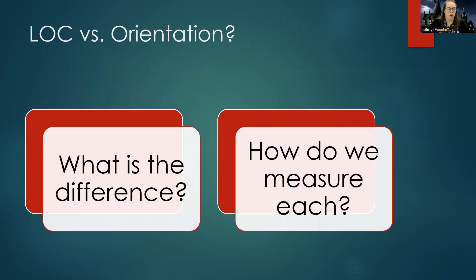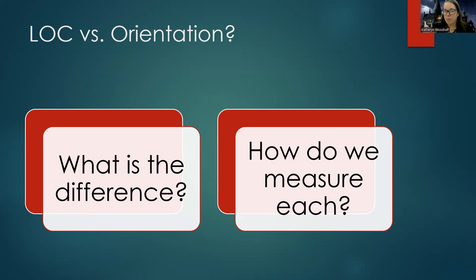Let's get into the neuro assessment. First, let's talk about level of consciousness versus orientation — what's the difference and how do we measure each? Students often get these mixed up because most people say 'alert and oriented times four.' The alert part is level of consciousness, and the oriented times four is a completely separate thing. They go hand in hand since most people who are alert are hopefully also oriented, but if a doctor asks about orientation versus level of consciousness, those are very different questions.